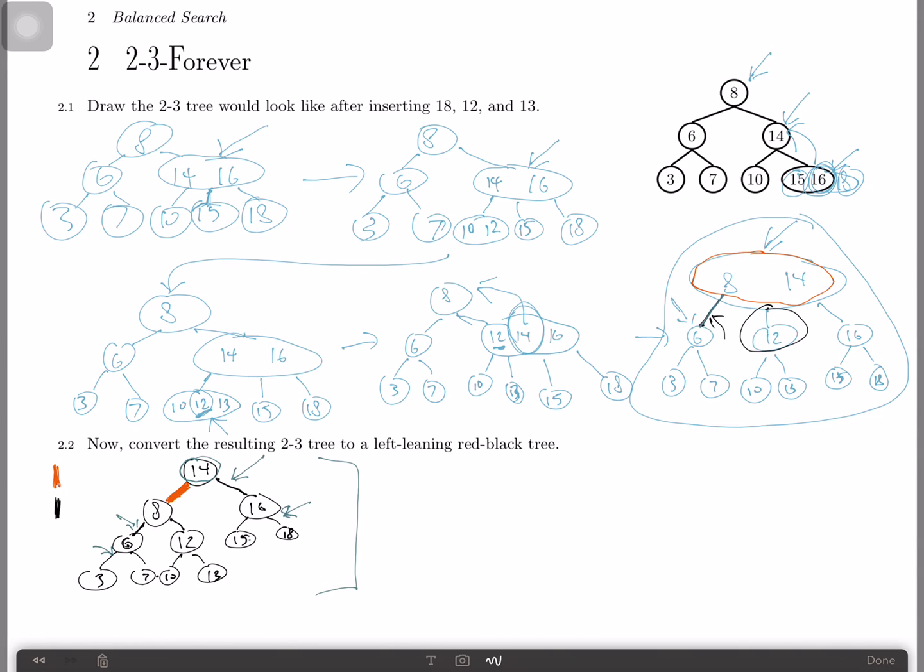And one more thing about left-leaning red-black trees. Notice that this is a binary search tree. So if we look at any node, everything to its left is less than or equal to it and everything to its right is greater than or equal to it. So this is also a valid BST. So that is how you insert items into a 2-3 tree as well as how to convert a 2-3 tree into a left-leaning red-black tree. If you have any questions, feel free to ask your senior mentors or anyone else in CSM and we will help you clarify any misconceptions that you may have.